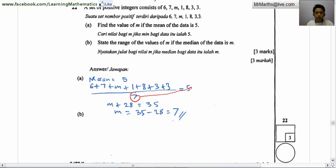Let's take a look at b - median. State the range of value of m if the median of data is m. If m is the median, then m needs to be in the middle, so we need to rearrange this number from 1, then 3, then 3 again, then m, then 6, 7 and 8. We have 3 on the left and 3 on the right, so the middle one is the median. The answer is m is greater than or equal to 3 or less than or equal to 6.